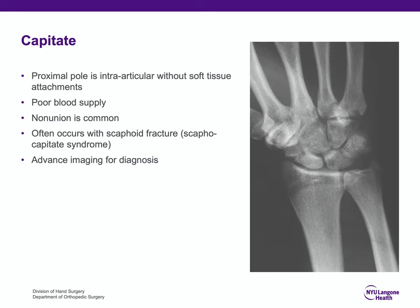If undertreated — or even when treated appropriately — nonunion of the fragment is common. It also commonly occurs with a scaphoid fracture, and then it's called the scaphocapitate syndrome as seen on this radiograph. If you do have an index of suspicion for a capitate fracture, advanced imaging is often required.